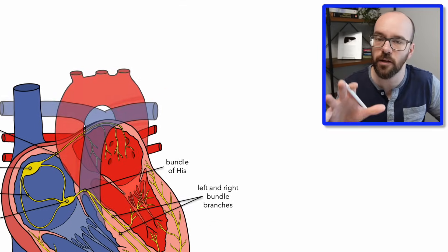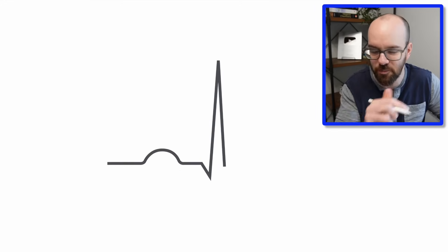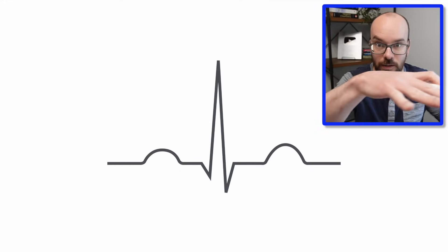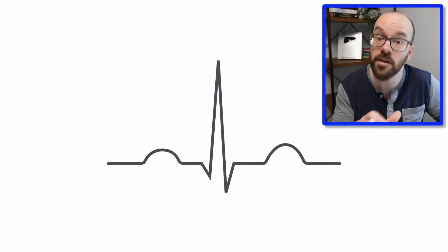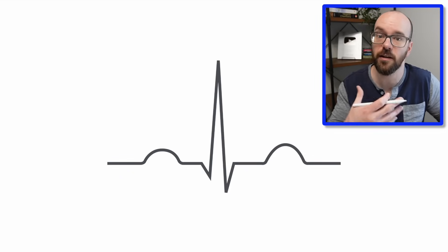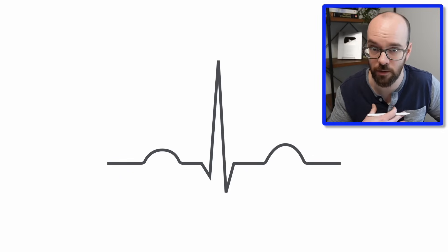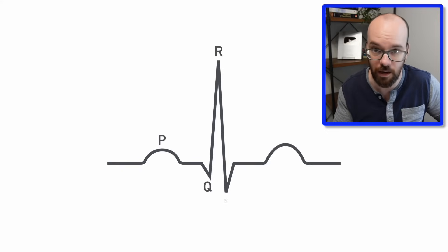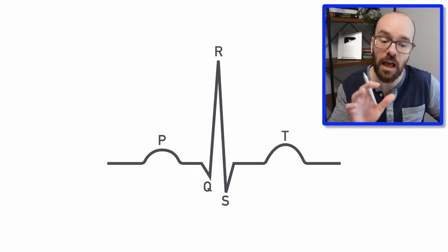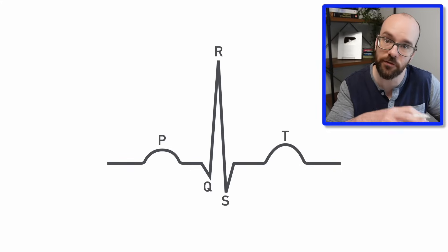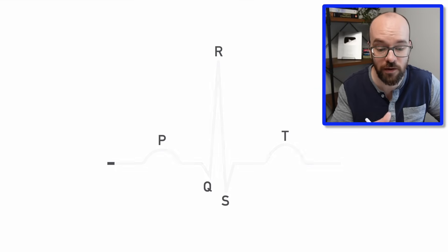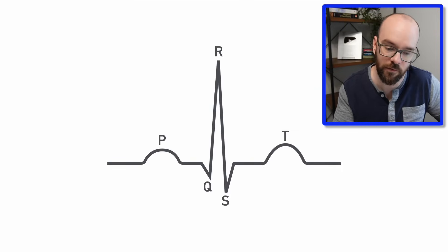Now let's look at an ECG or EKG — the thing seen in doctor movies where you see the heartbeat trace and if it stops, the heart has stopped. It measures electrical activity happening in the heart, and it has three regions: the P wave, the QRS complex, and the T wave. These three sections correspond to different things happening in the cardiac conduction pathway.